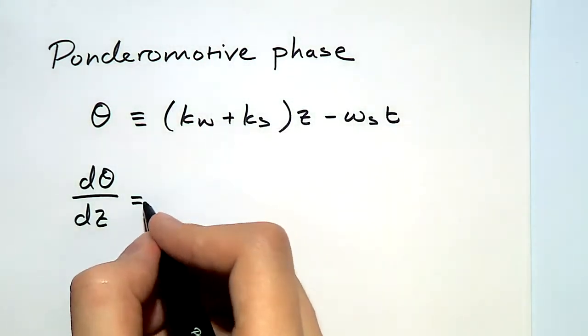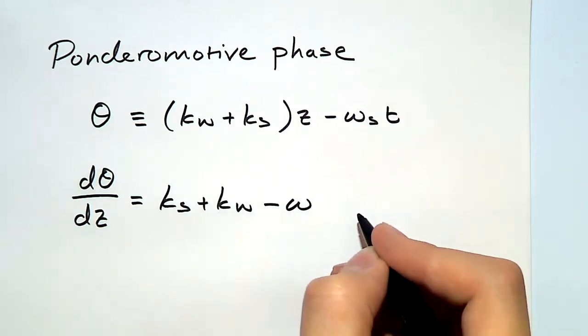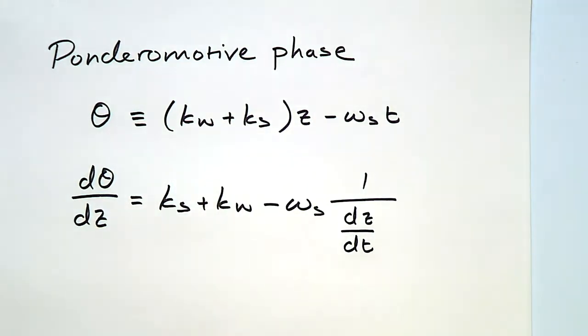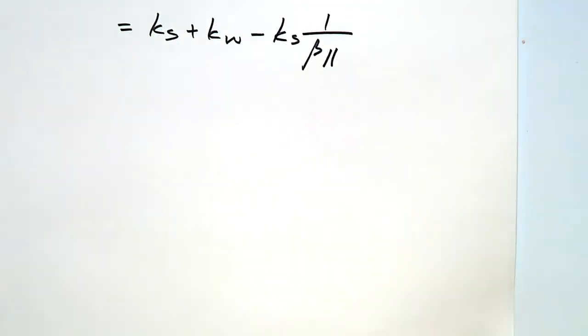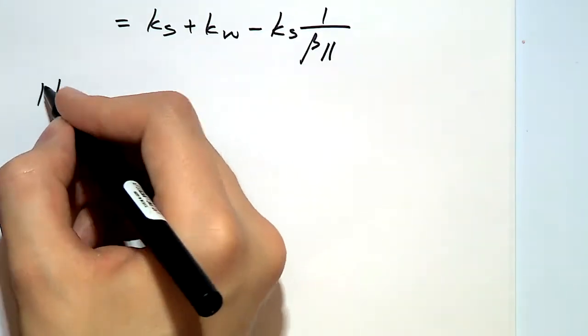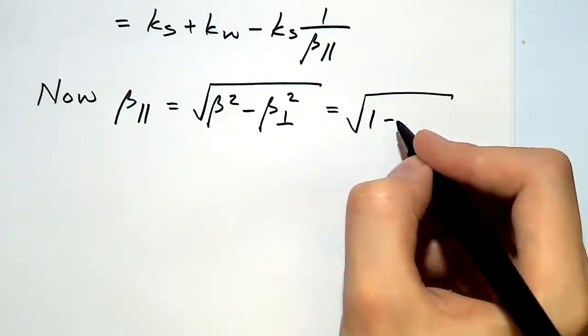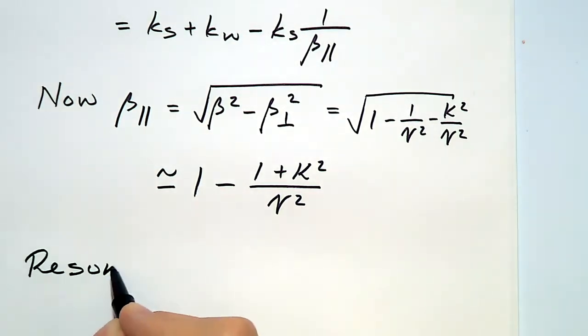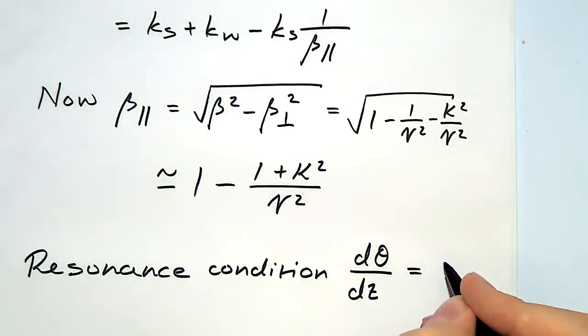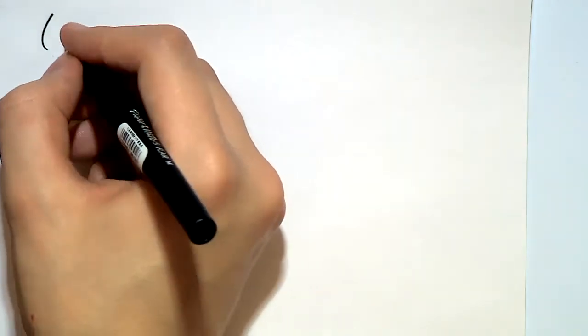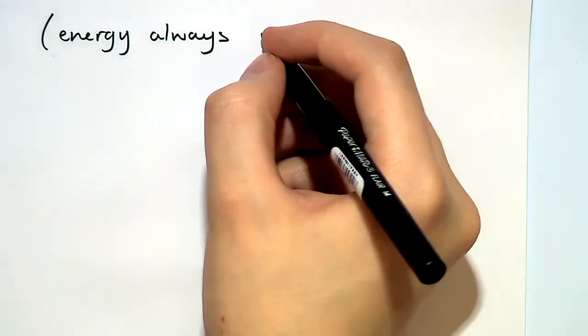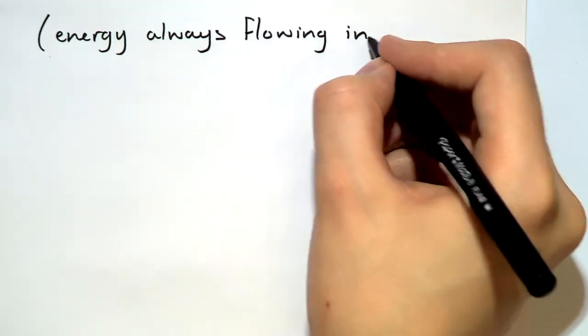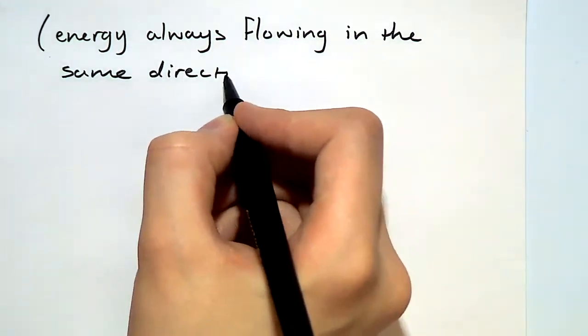We're also going to require the derivative of it with respect to z, and we're going to write this down in terms of the renormalized parallel velocity, and expand the parallel velocity in terms of the perpendicular one, just using the properties of the gamma factors. We're going to be interested in finding the zeros of this derivative. This corresponds to the resonance condition where the energy is always transferred either to or from the electromagnetic field to the electrons.